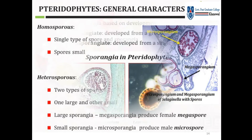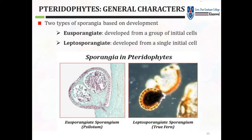Based on development, there are two types of sporangia: eusporangiate and leptosporangiate. Eusporangiate sporangia develop from a group of initials. Leptosporangiate sporangia develop from a single initial cell. As you can see in the diagram, group of initials develop as in Selaginella, and single initial cells develop as in true ferns.